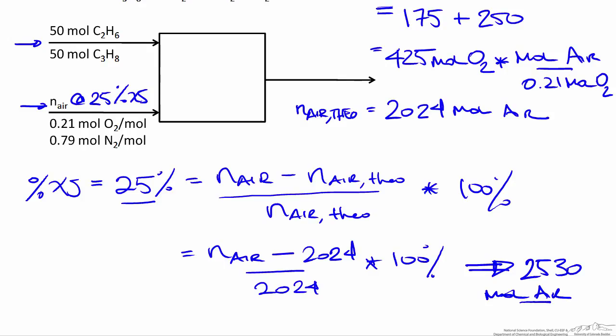So anytime we are looking for the percent excess air, whether it is a pure species or a mixture being combusted, we assume complete combustion of all fuel in the mixture.